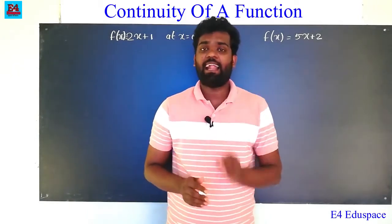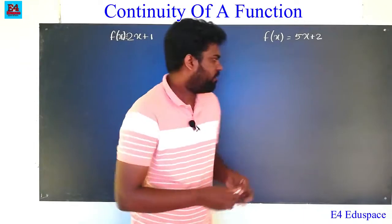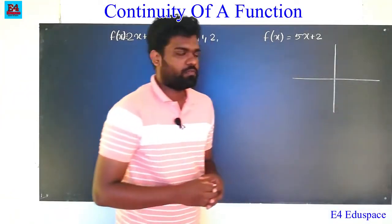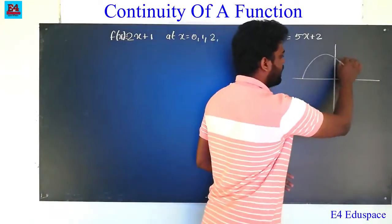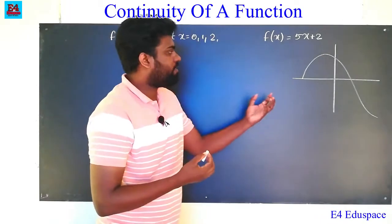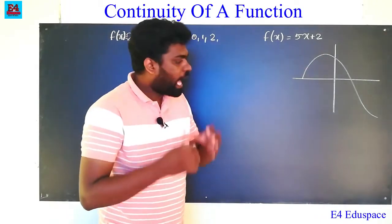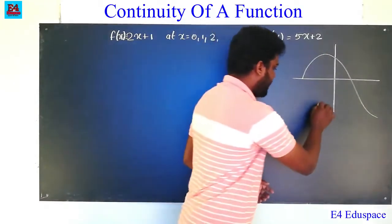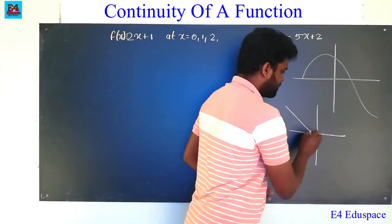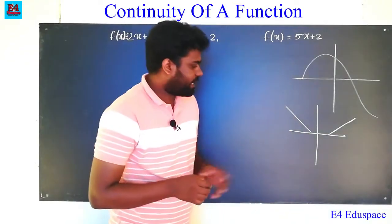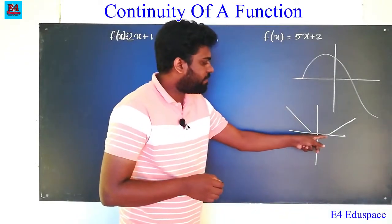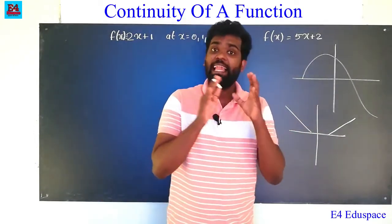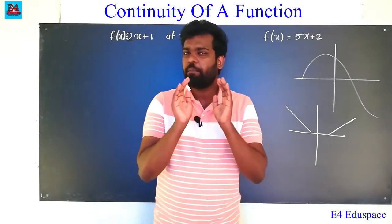If you have a continuous function, we will say simply: I am going to the x-axis and y-axis. I am going to draw a curve. If we have a continuous function, I will trace this function. If you have a continuous function, one function continues — it will be continuous. This is basic theory.